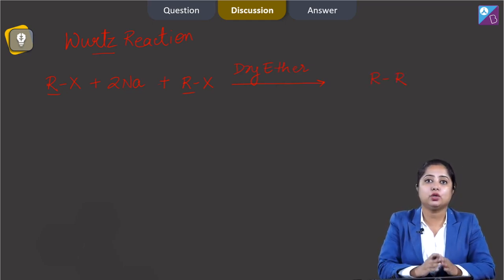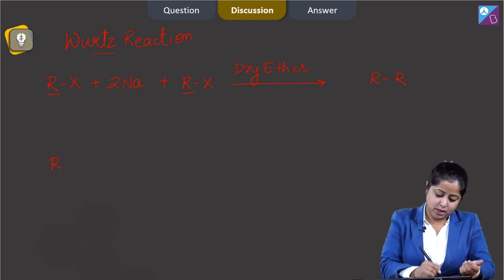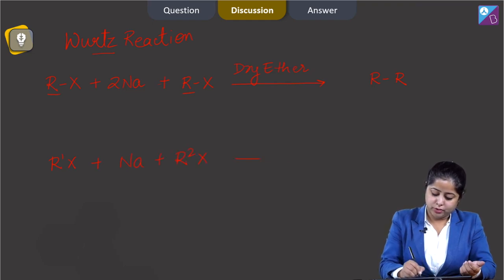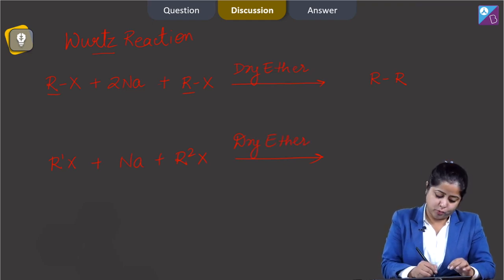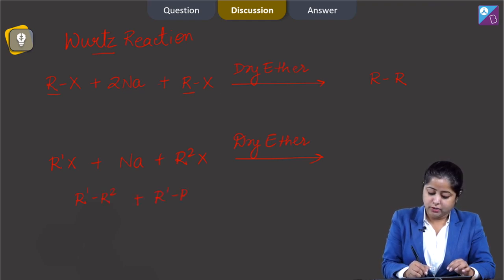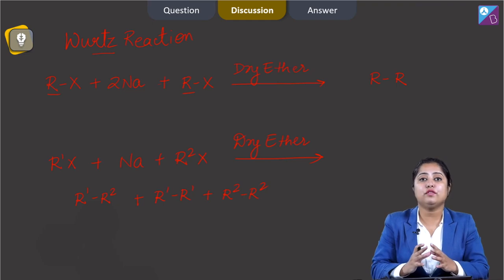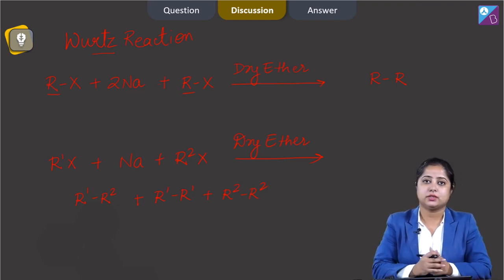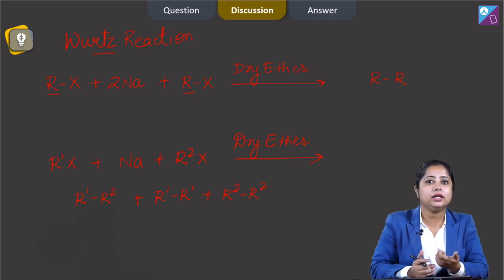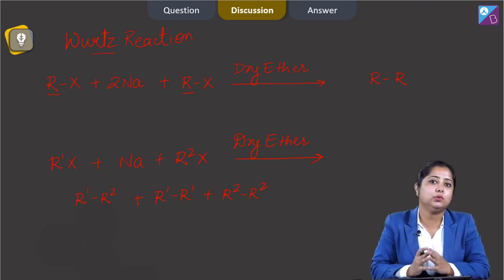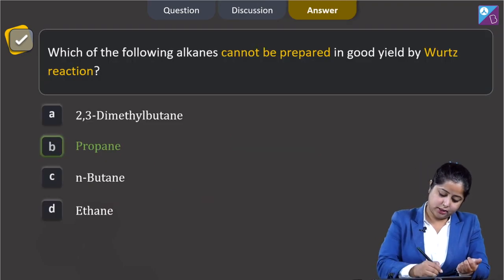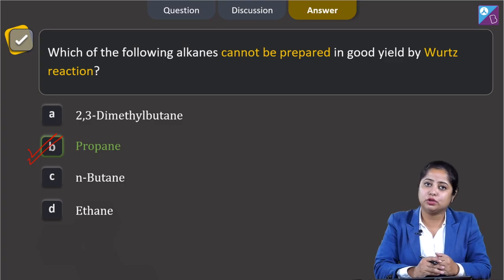If the two alkyl groups used are not the same, that means one is R1 and another is R2, then in dry ether the products formed will be R1–R2, plus R1–R1, plus R2–R2. That means a mixture of alkanes will be formed. As a result, if we want to prepare an unsymmetrical alkane, Wurtz reaction is not a good method since the yield would not be good. Therefore, the correct answer is option B — propane.